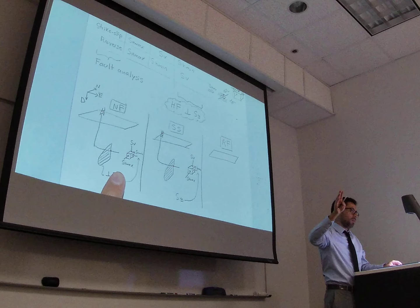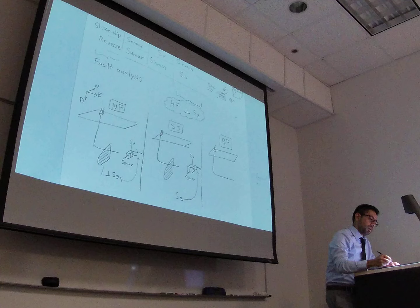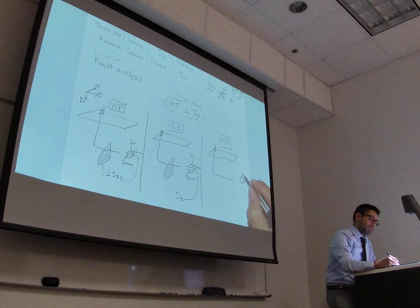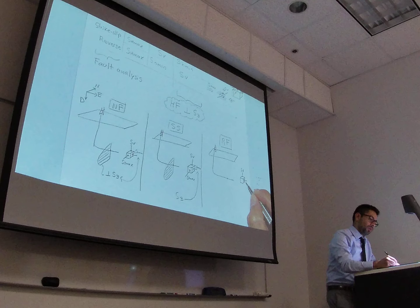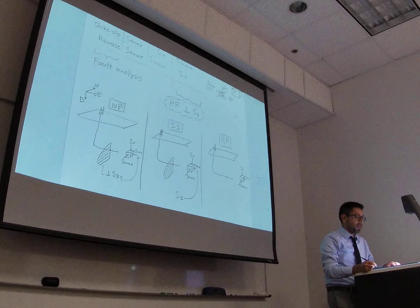So, let's go for the last case, which is reverse faulting. I'm going to do another wellbore here. And now the stress condition is going to be: this one is going to be the lowest, this one is going to be intermediate, and this one is going to be the largest. What is going to be the orientation of hydraulic fracture in this place?